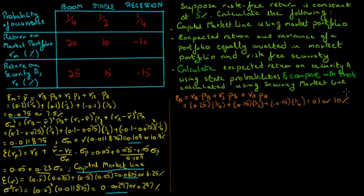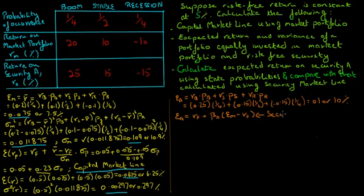Now we estimate the return on security A using the security market line. The security market line displays the relationship between risk and expected return on an asset, showing the expected return as a function of its beta with the market portfolio. Based on the SML, the expected return on security A equals the risk-free rate plus beta of A times the expected return on the market portfolio minus the risk-free rate.